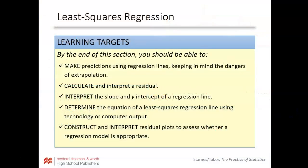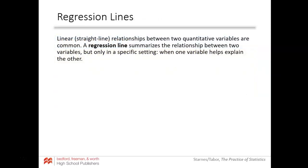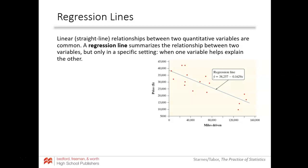We have our learning targets and they are numerous. Regression lines refer to linear relationships between two quantitative variables, which we talked about in the last section. Our regression line summarizes the relationships between those two variables, but only in a specific setting when one variable can help explain the behavior of another variable. We have a scatter plot and we are able to fit it to a regression line, which helps us determine behaviors of points we don't know and make prediction values.